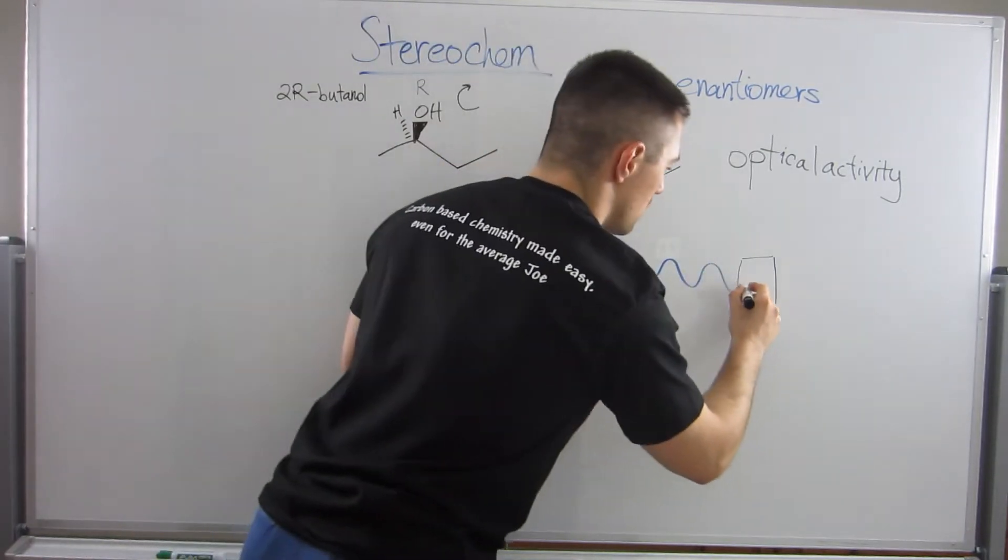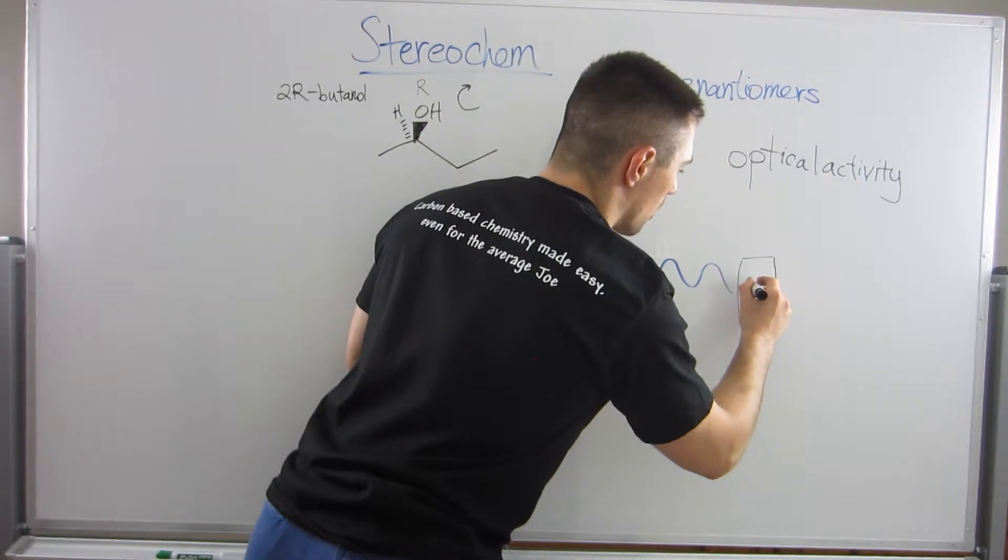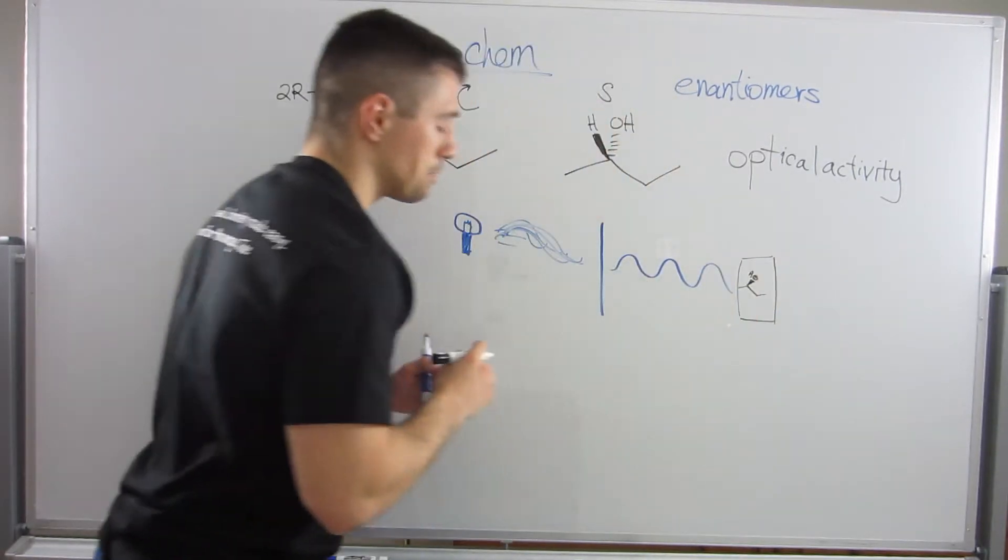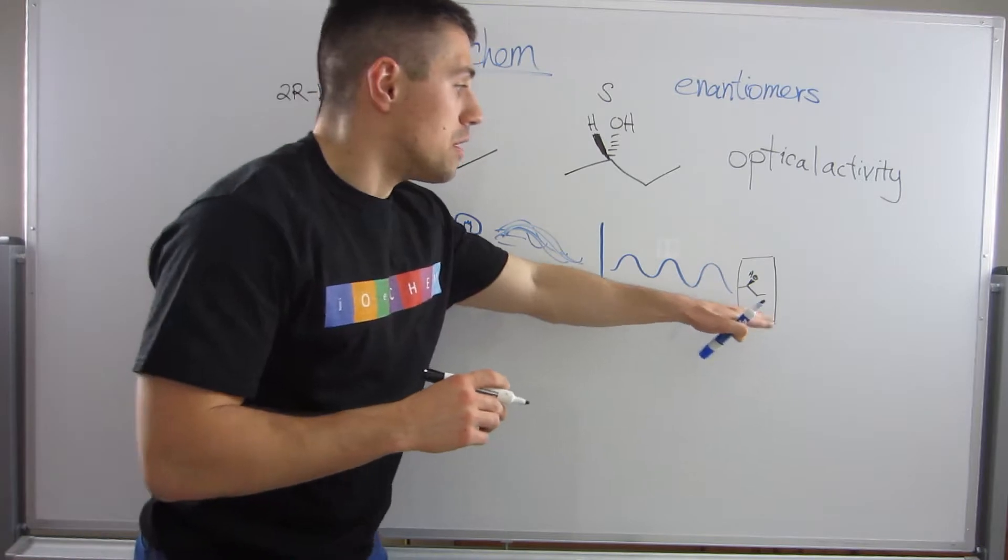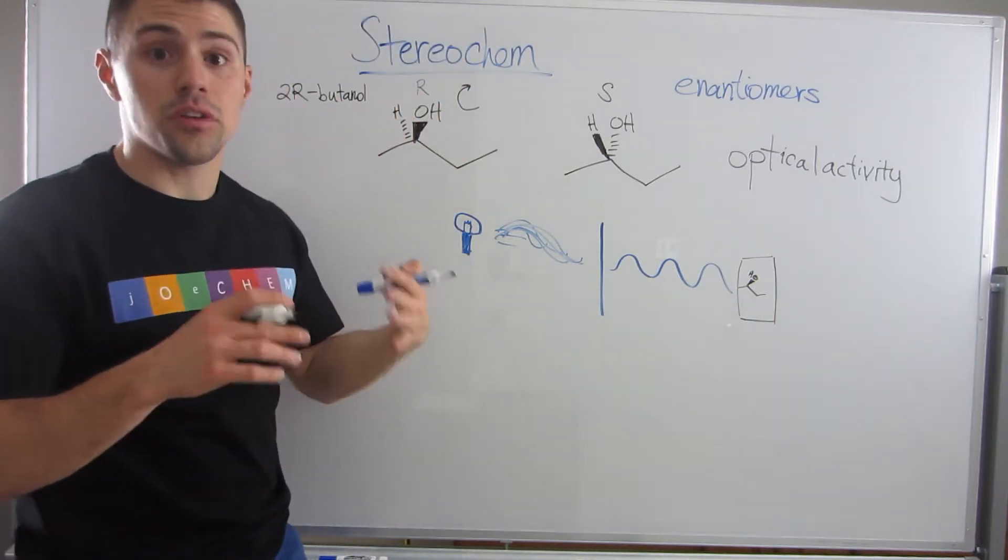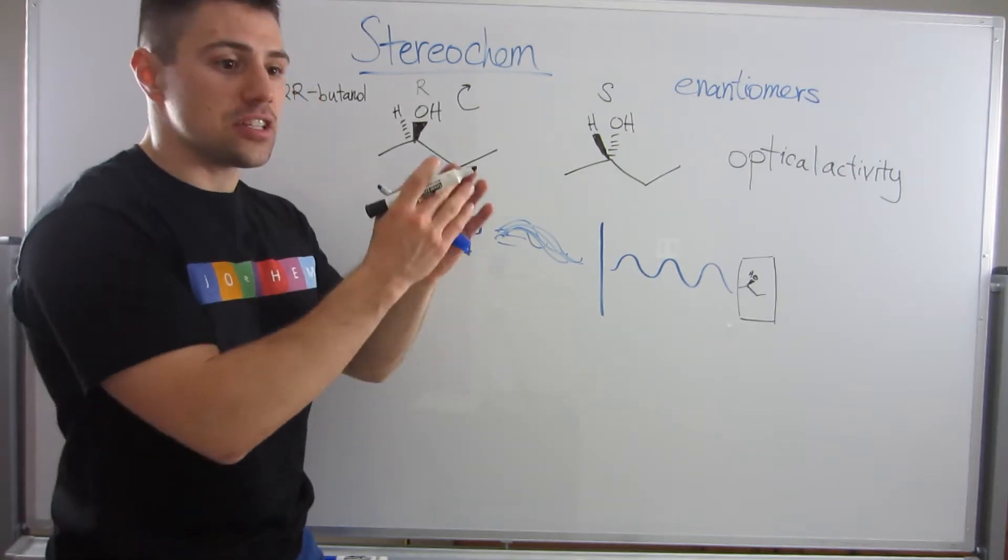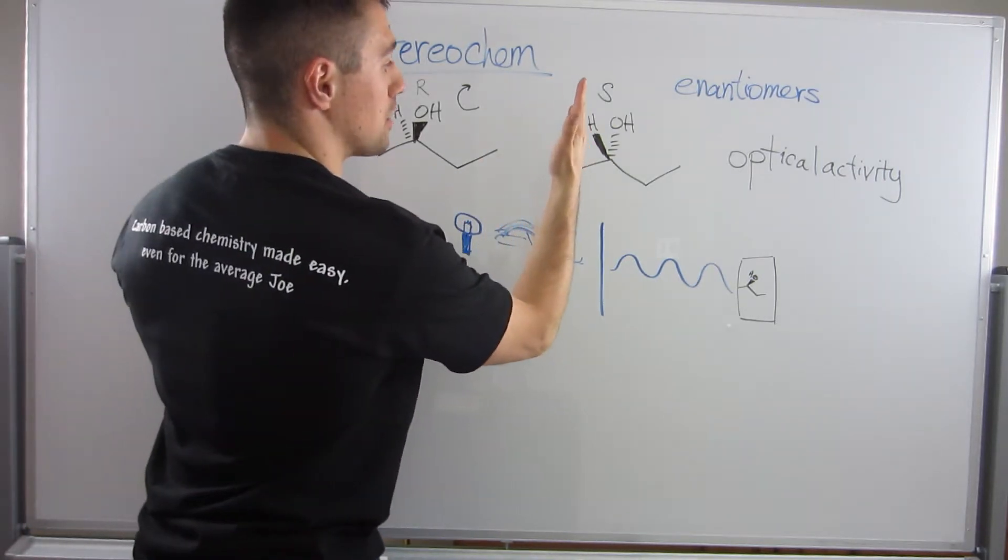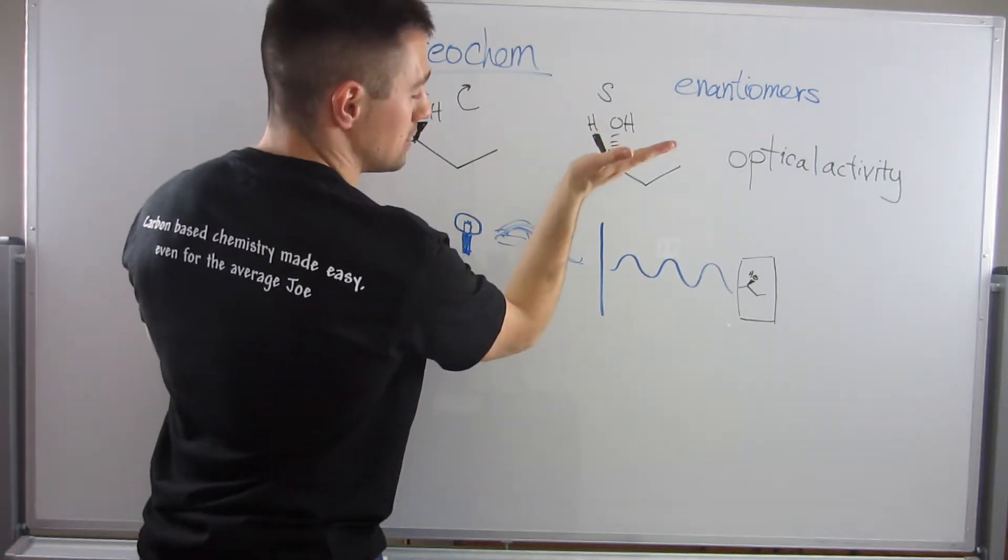A whole bunch of the R enantiomer. What this will do, based on the fact that it has this type of stereo configuration, is it's going to either bend the light to the left or to the right. Okay?